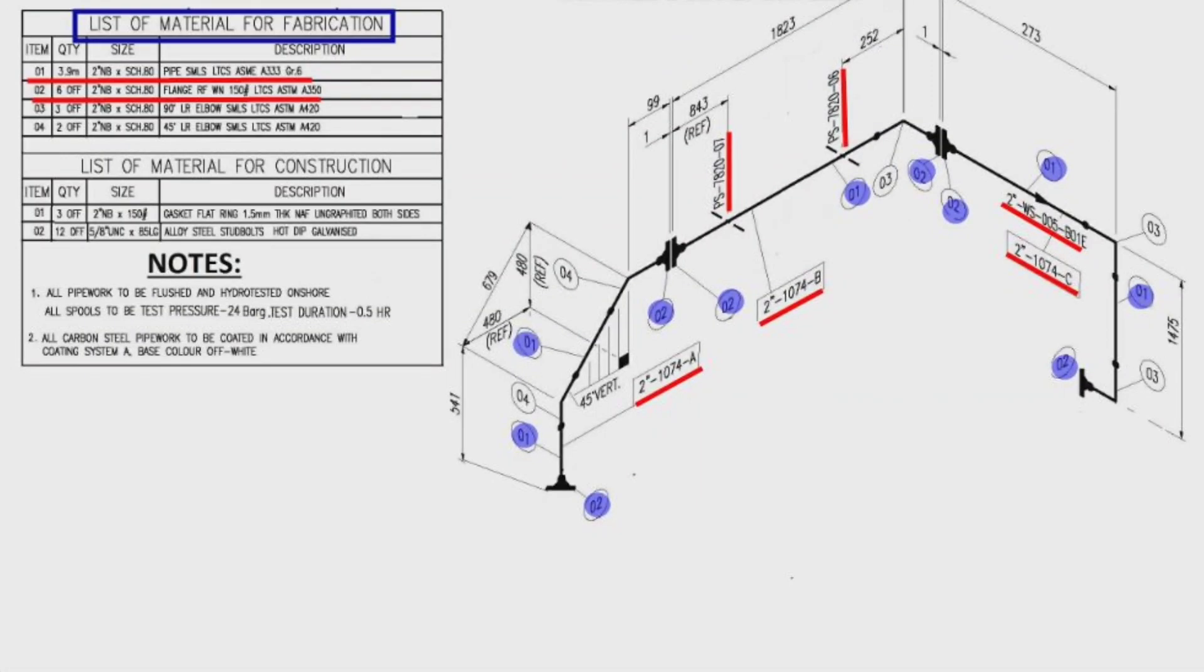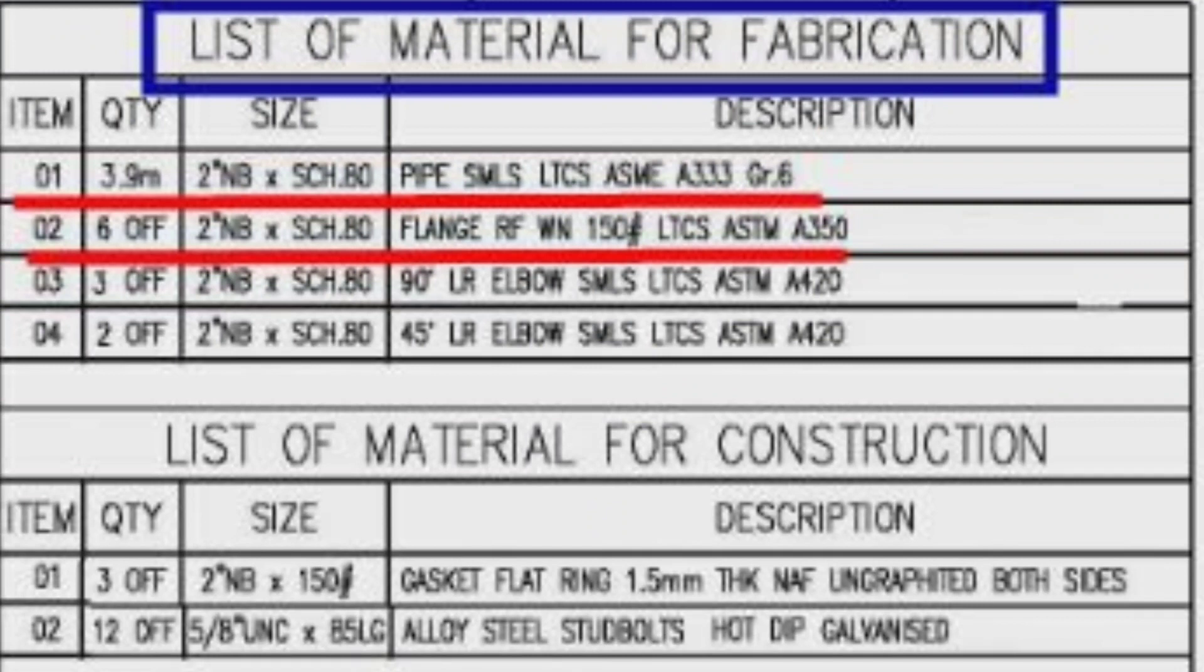Detail number 3 was used three places in the pipe isometric. The item number 3, the quantity total is 3 pieces, size is 2 inches, wall thickness is schedule 80, 90-degree long radius elbow, seamless type, low temperature carbon steel material, ASTM A420.